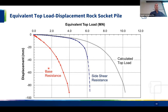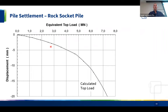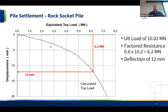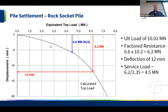With a resistance factor of 0.6, factored geotechnical resistance of the pile is 6.2 MN. The load-displacement curve clearly shows how quickly shaft resistance develops versus how much deformation is needed for base resistance. At ultimate load of 10 MN with factored resistance just over 6 MN, predicted settlement is 12 mm. At service load — about 35% below factored resistance, approximately 4.5 MN — expected settlement is approximately 6 mm.